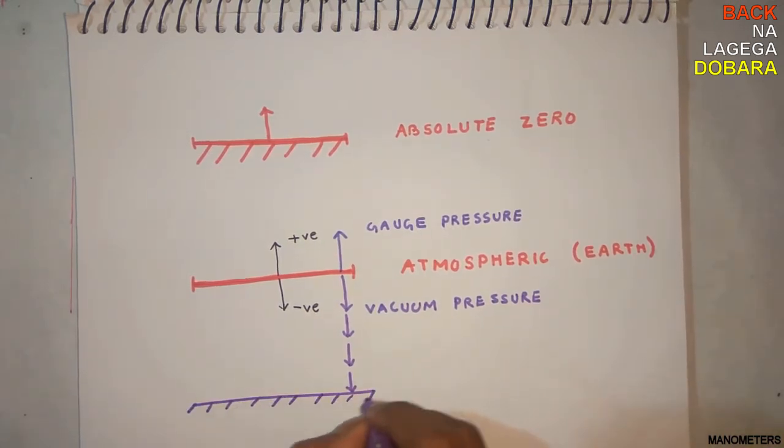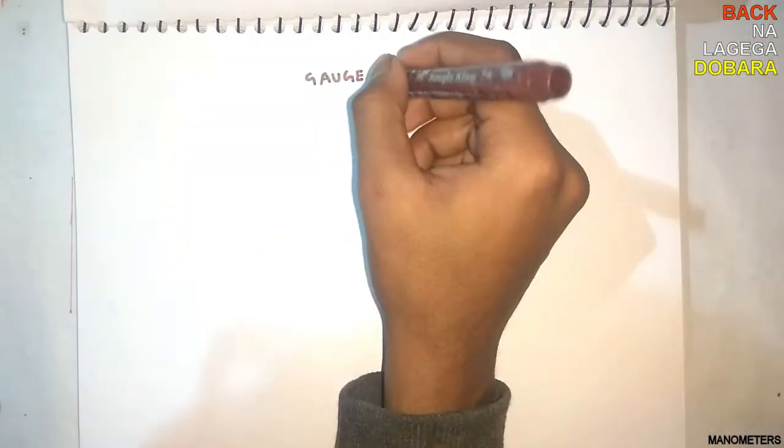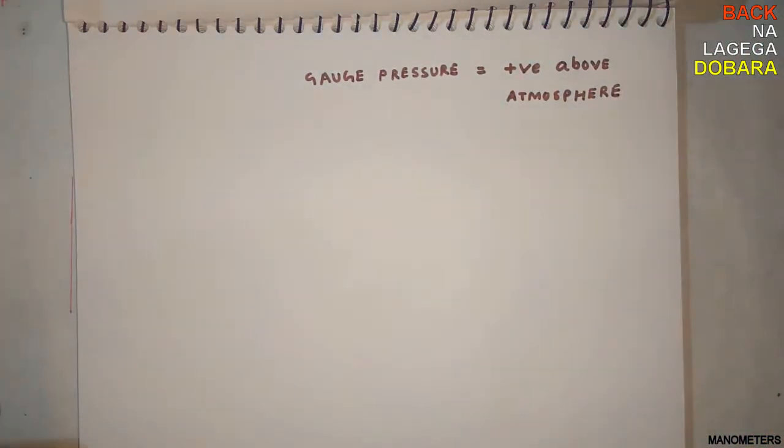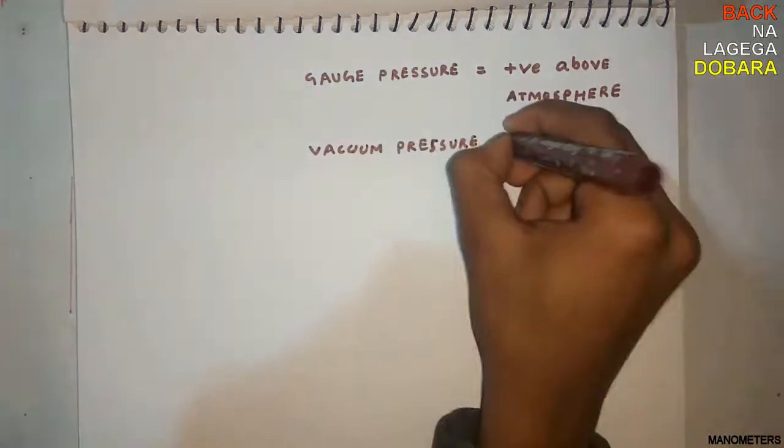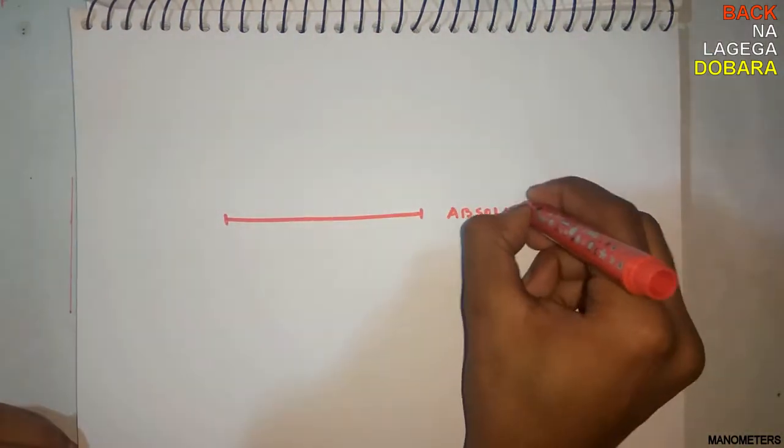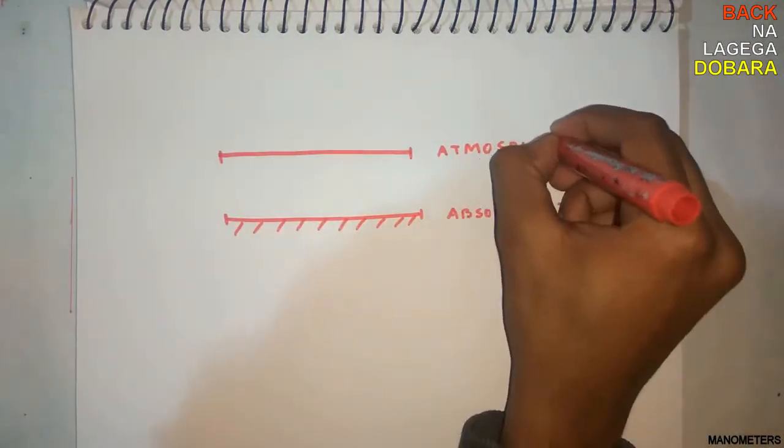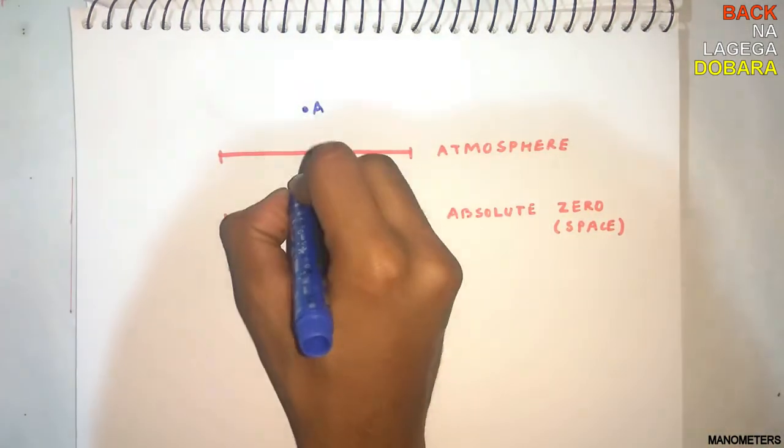The gauge pressure is positive above the atmospheric level, for example the pressure inside the Coke bottle. The vacuum pressure is negative. Now let's see how we represent pressure at different regions of scale. For example, here A and B represent two pressure points.